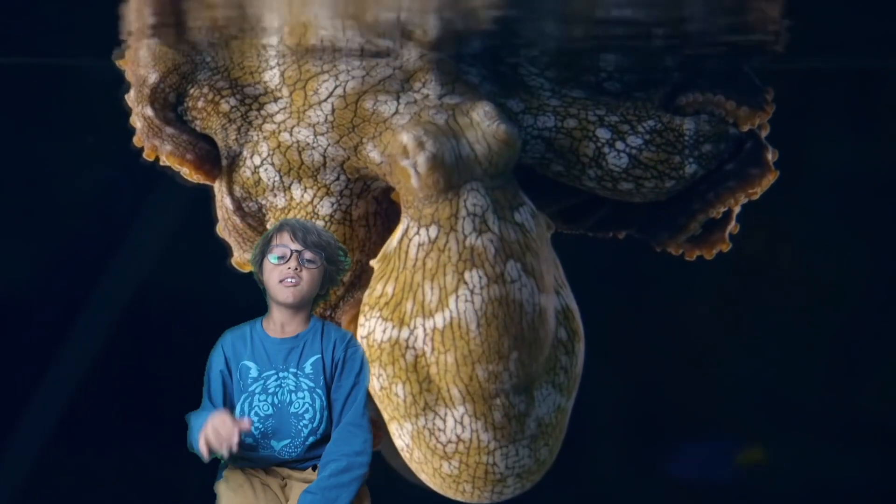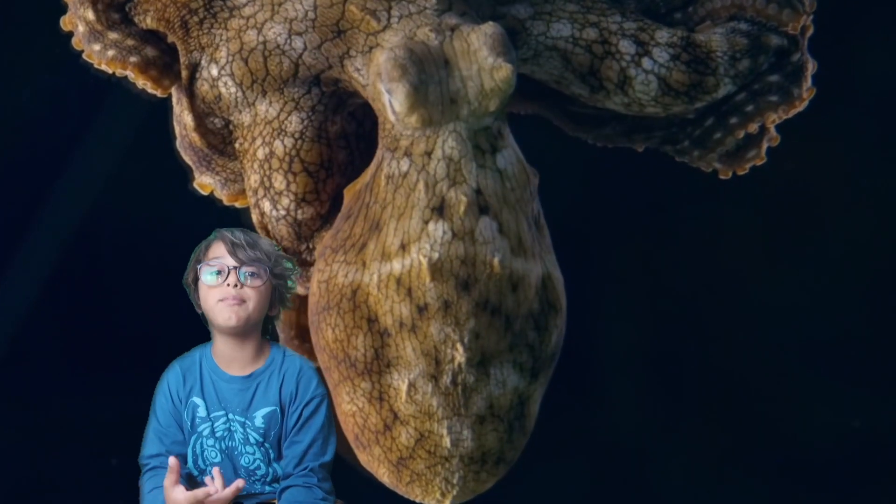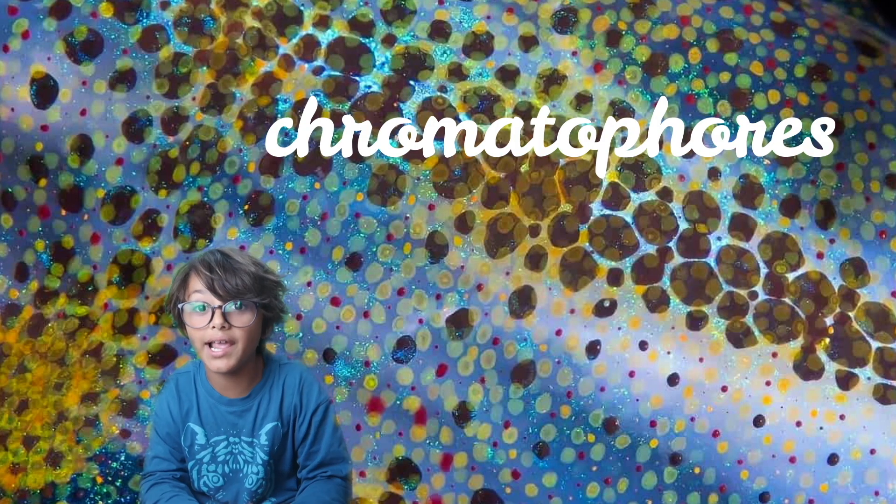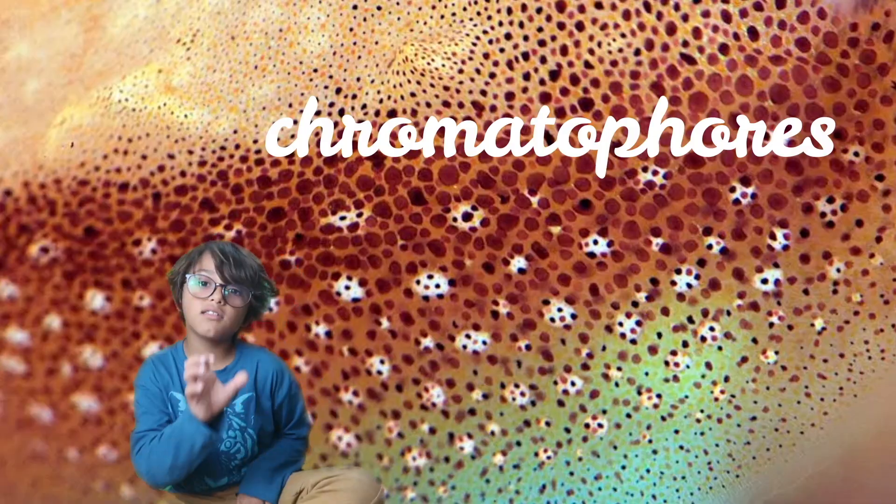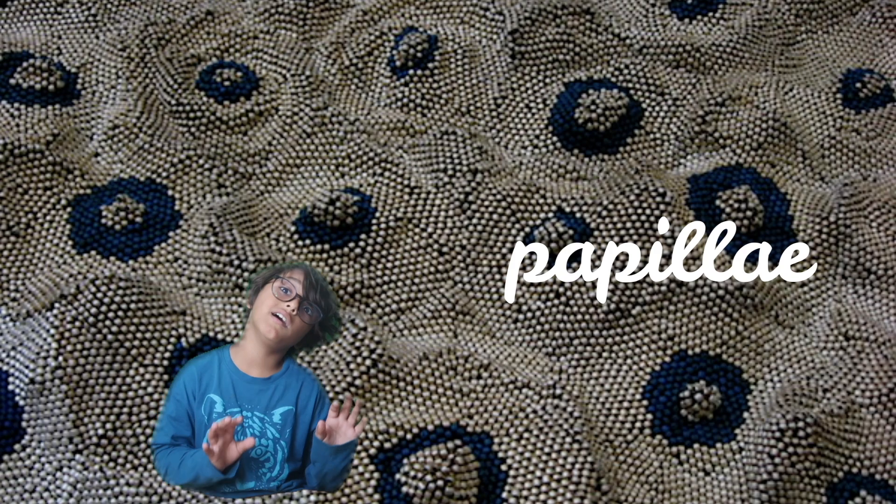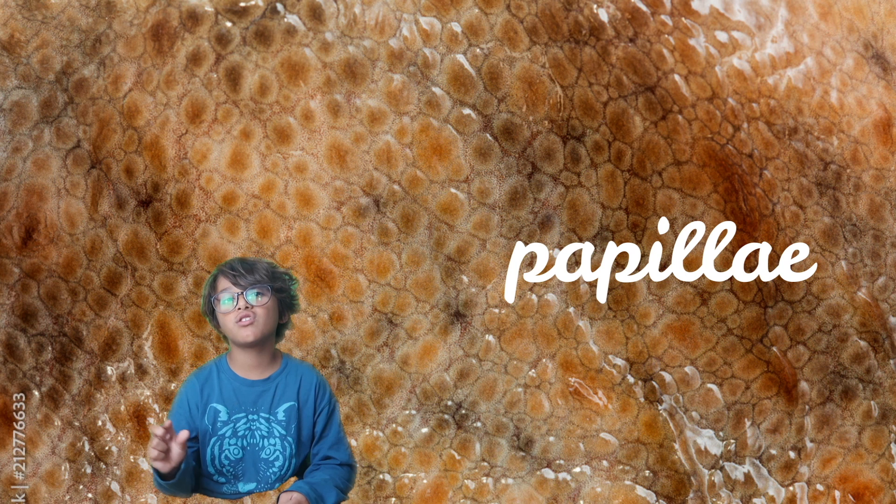Octopuses are probably one of the most skilled camouflage artists. There are little cells in their body called chromatophores which change their skin instantly. And there are these little areas of skin called papillae which they can expand and retract to change their skin textures to camouflage perfectly. And did you know that some scientists have actually tried to make some synthetic skin just like an octopus skin.